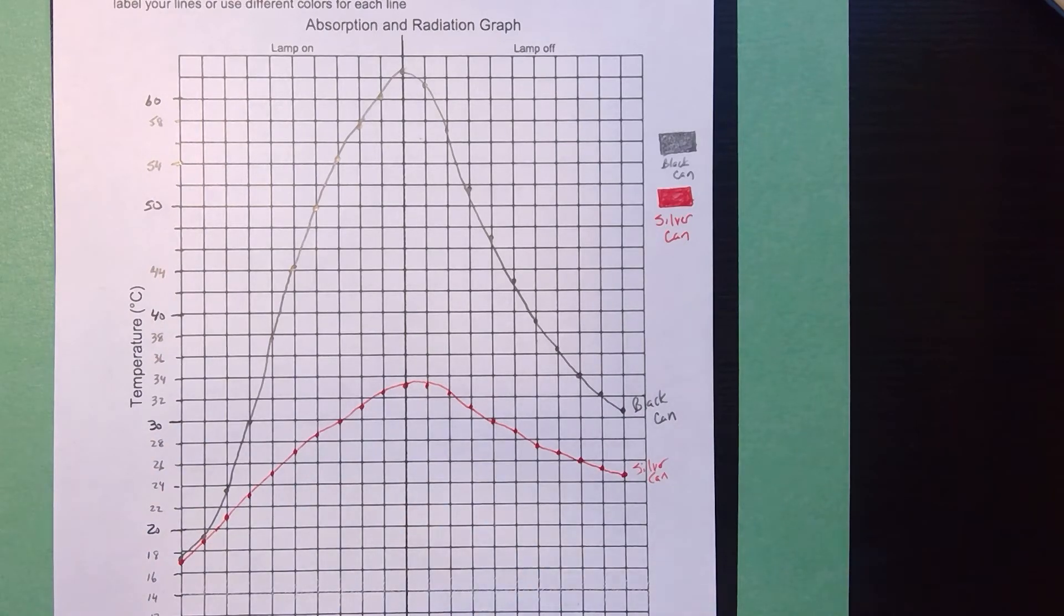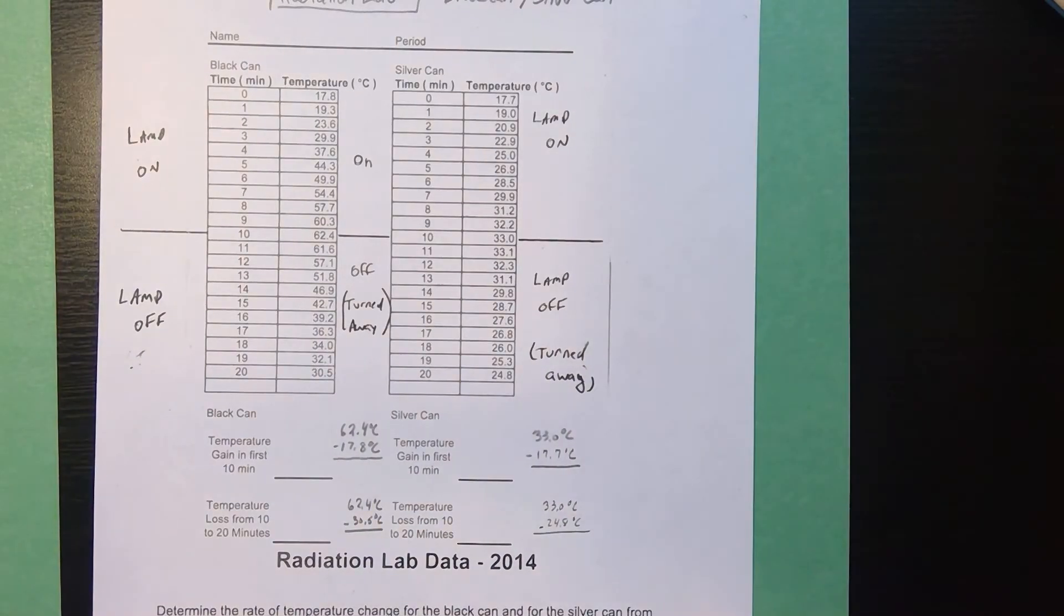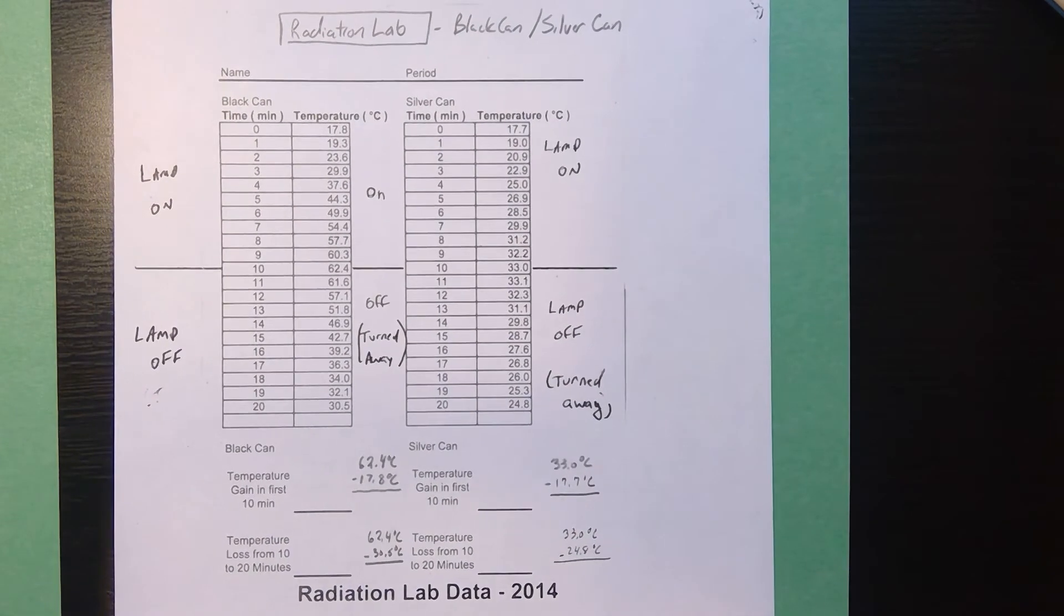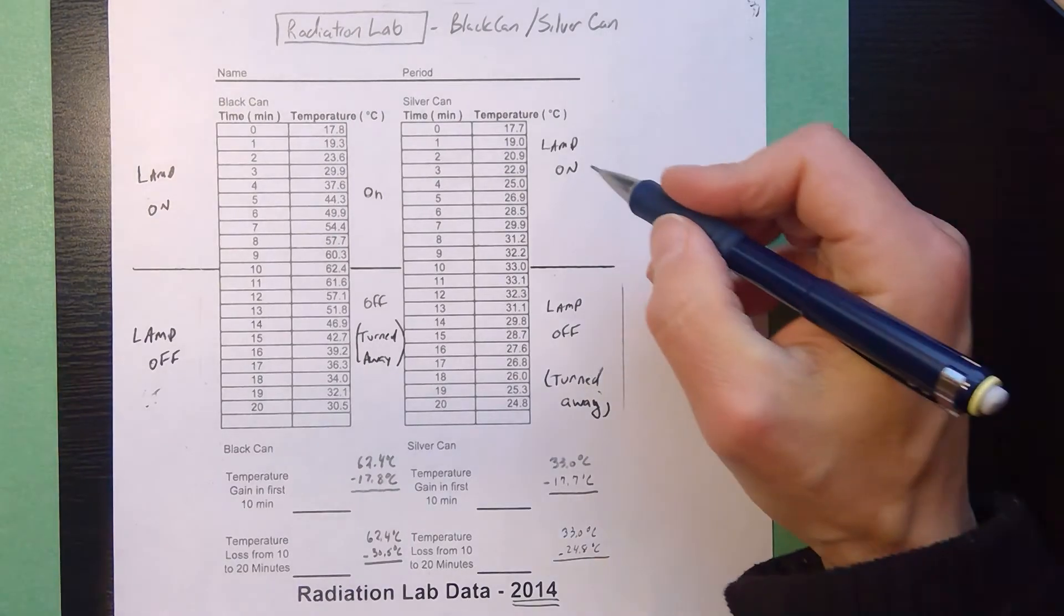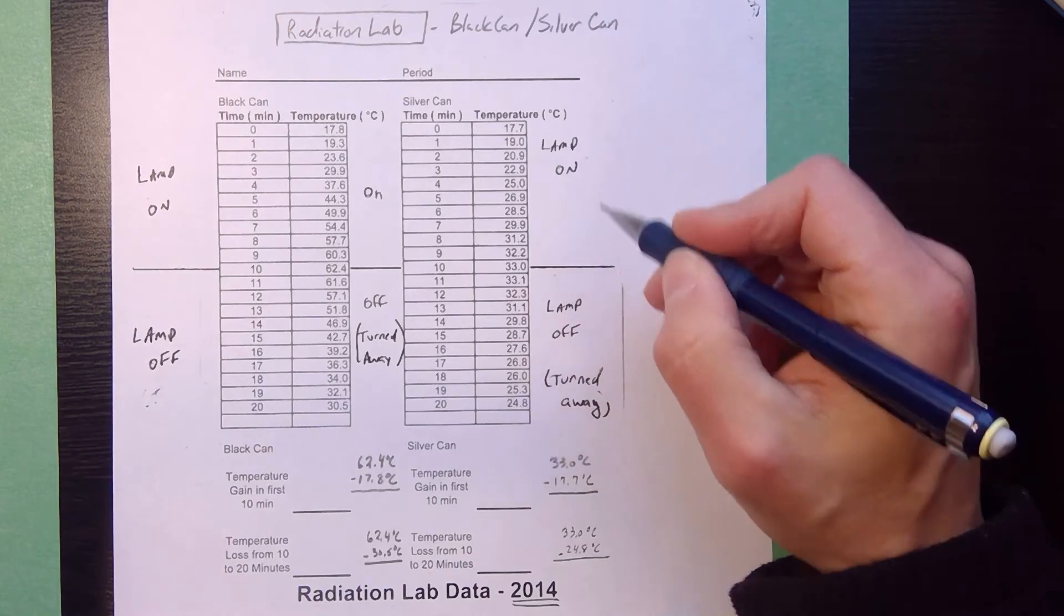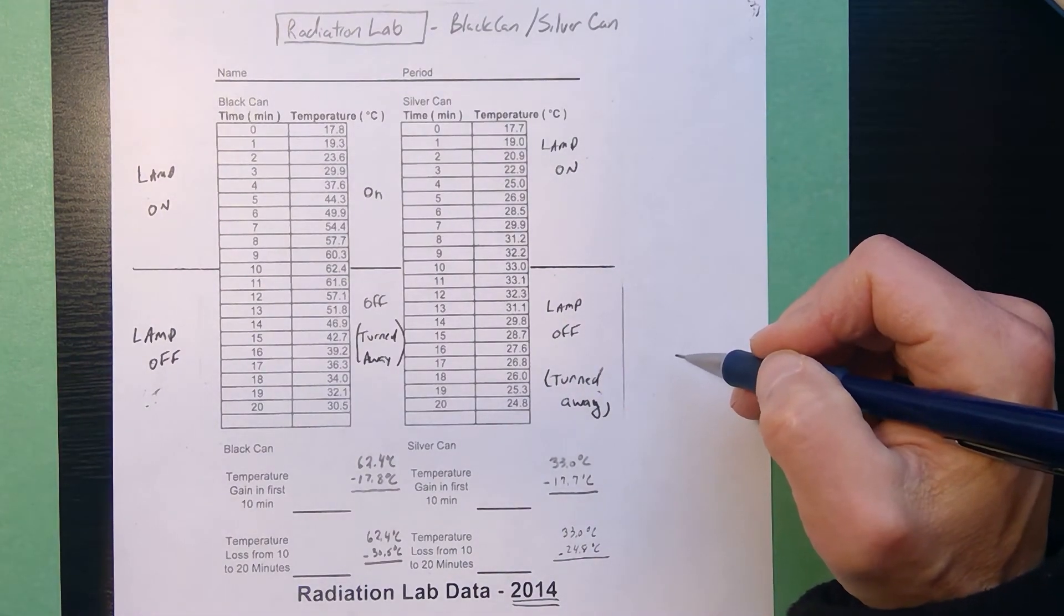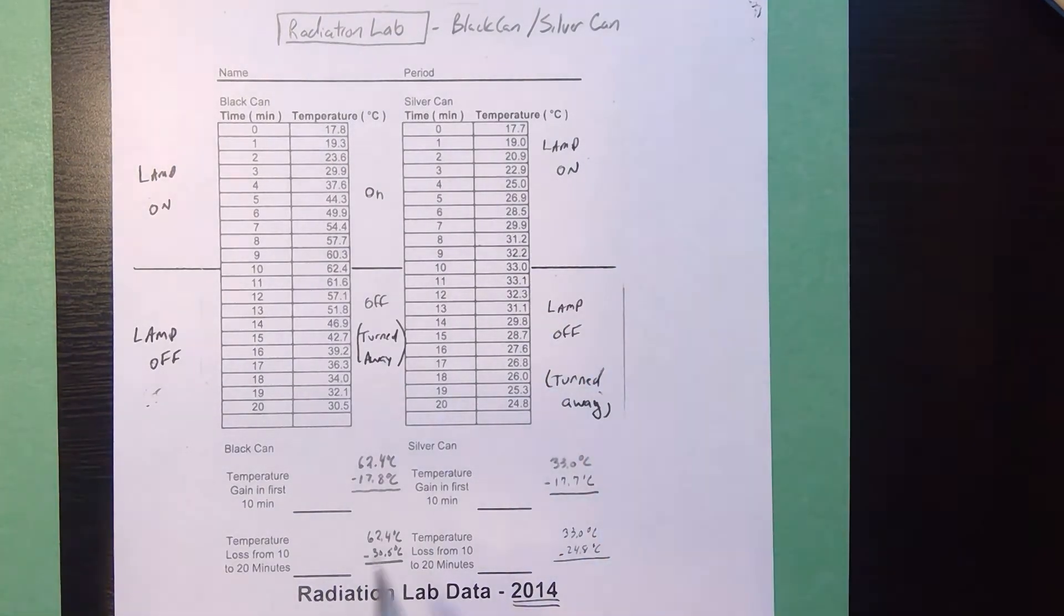Alright, to the data table. Now, this data we obtained using the vernier probes in 2014 but we can obviously compare this to what we're going to observe in class. Physics is physics this is going to work out. So, 10 minutes the lamp was on we turn the lamp off we remove it so it doesn't still radiate energy and then we watch what happens as the cans cool.